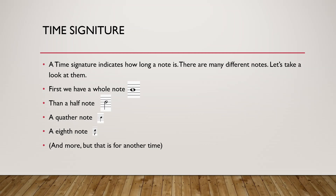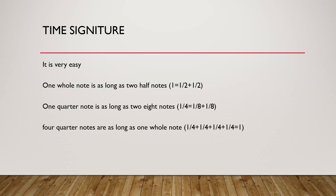First we have a whole note, which is just a circular dot. If we add a stick to it, it will become a half note. If we make the dot completely black it will become a quarter note. And when we add a flag to it, it will become an eighth note. The value of the note will divide by two every time we add something to it. One whole note is as long as two half notes. One quarter note is as long as two eighth notes. And four quarter notes are as long as one whole note.